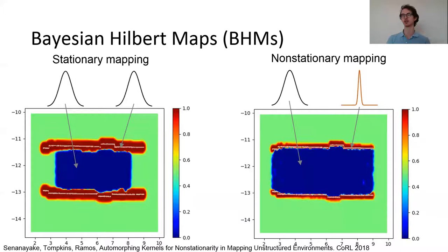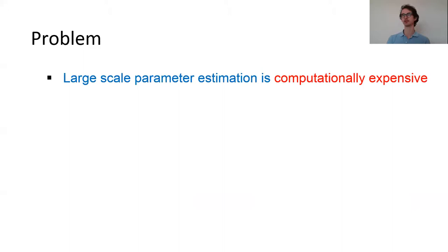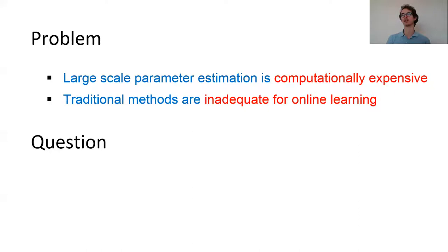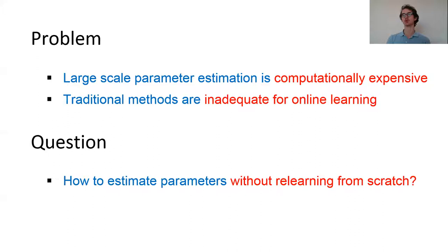The problem with all the previous methods is that for large environments parameter estimation is computationally expensive. This makes traditional probabilistic mapping techniques inadequate for online learning. This invites the question: how do we estimate parameters without relearning from scratch for each new environment?